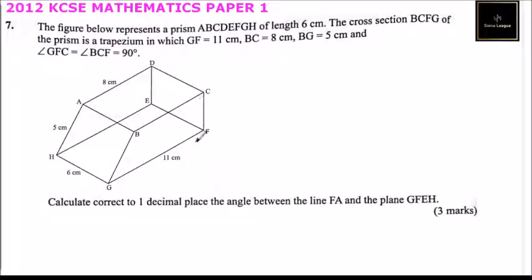In this trapezium, GF is 11 centimeters, BC is 8 centimeters, and BG is equals to 5 centimeters.